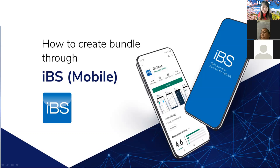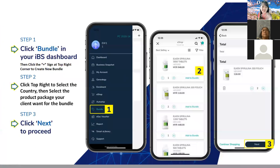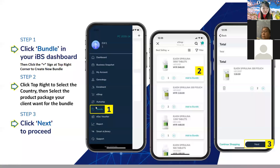After you log in to IBS, in the menu you can see the different functions — like the eShop, which is for you yourself to buy products. Today I'm going to highlight and share with you this new feature. We call it 'bundle.' This bundle is very useful.